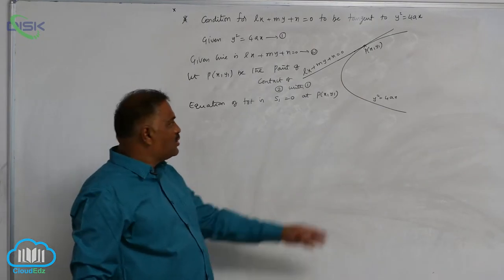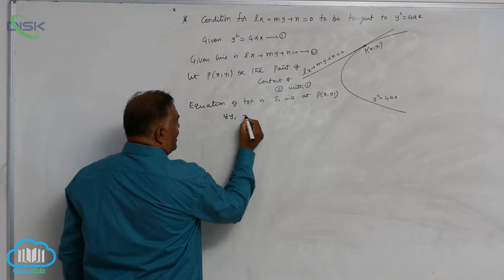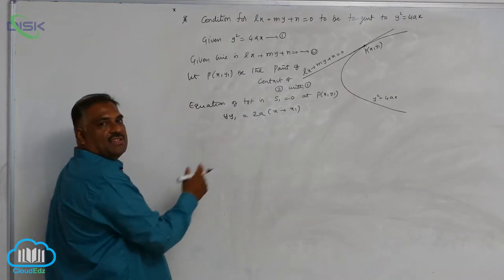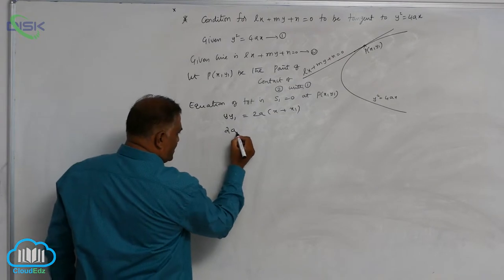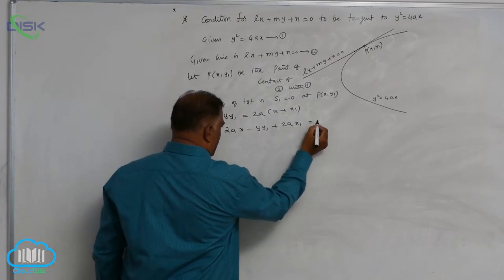Let us write s1 equal to 0 for this parabola. That is, yy1 is equal to 2Ax, or yy1 minus 2Ax minus 2Ax1 equal to 0. Call it equation 3.